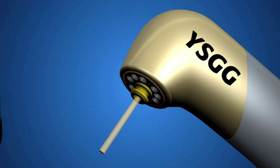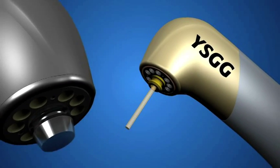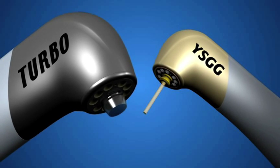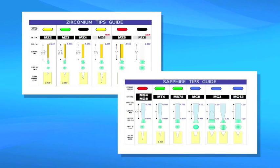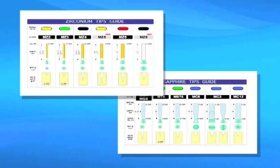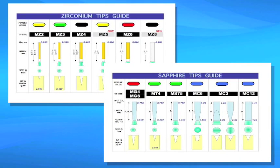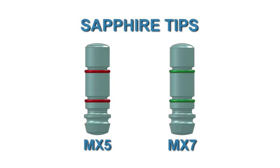There are two handpieces when using the Waterlase MD to prepare cavities: the MD Gold or the Turbo. Each handpiece uses slightly different tips. For the MD Gold handpiece, select from a range of zip tips or sapphire tips. For the Turbo handpiece, only Sapphire Turbo tips are available.